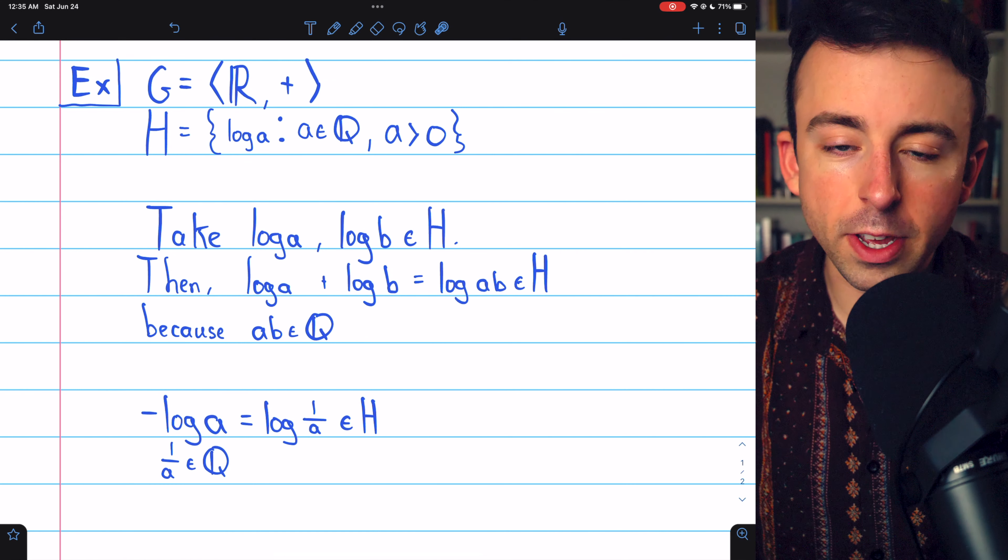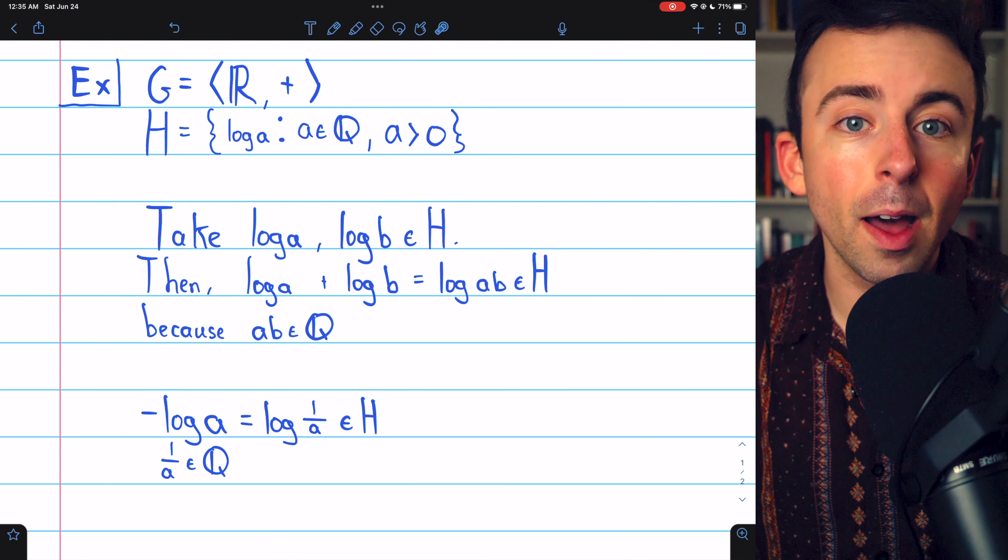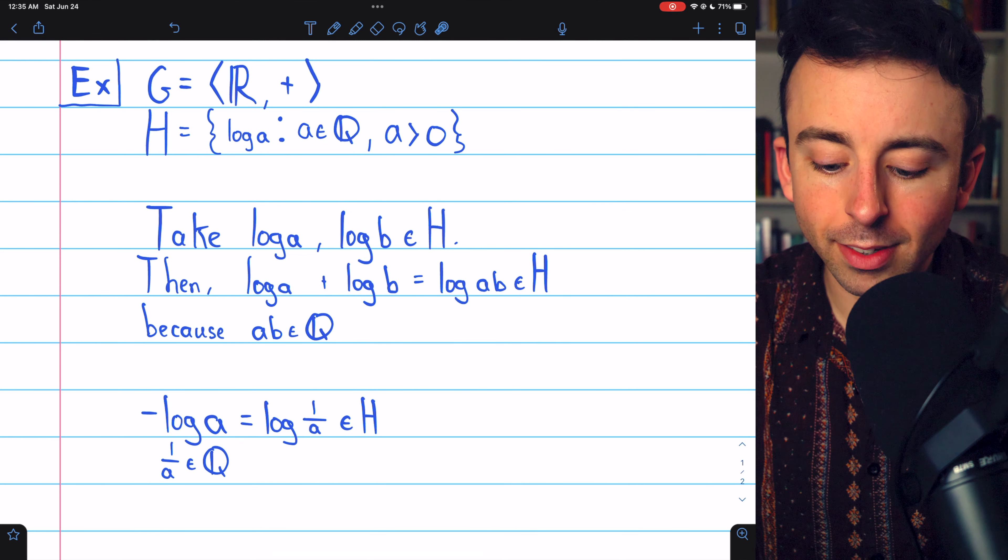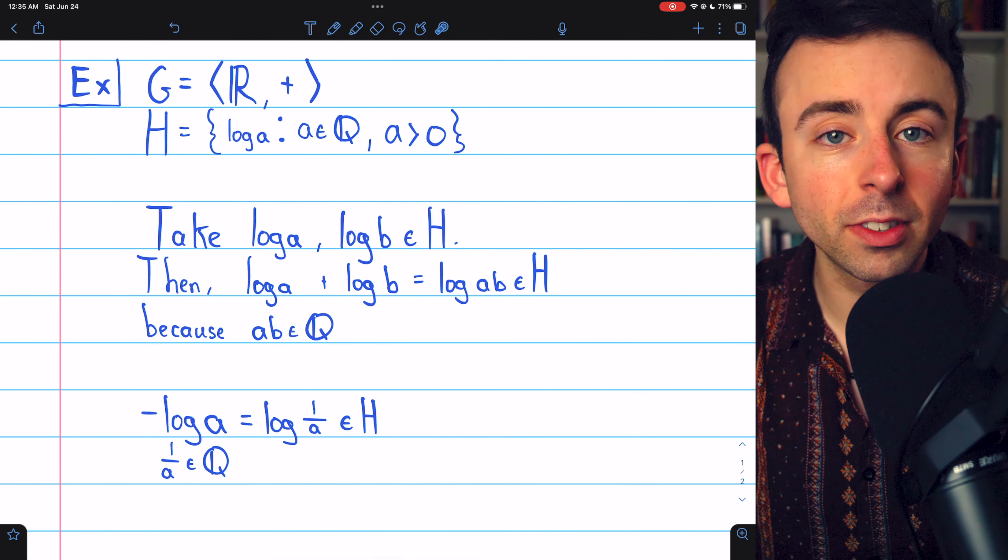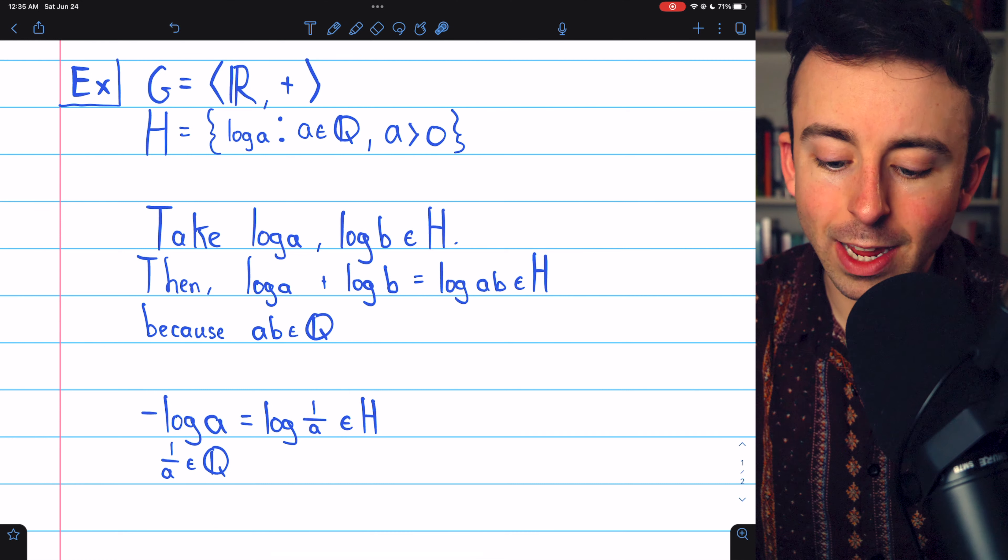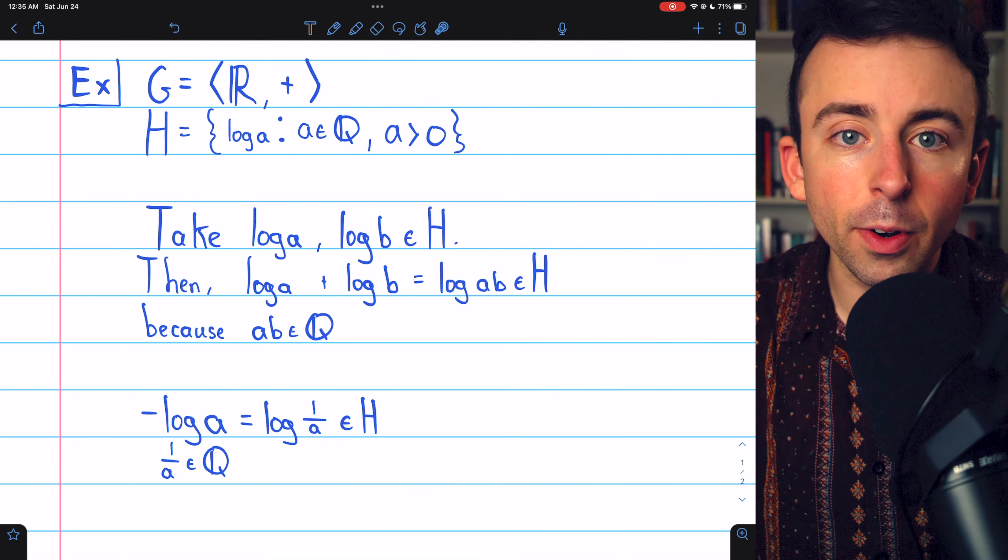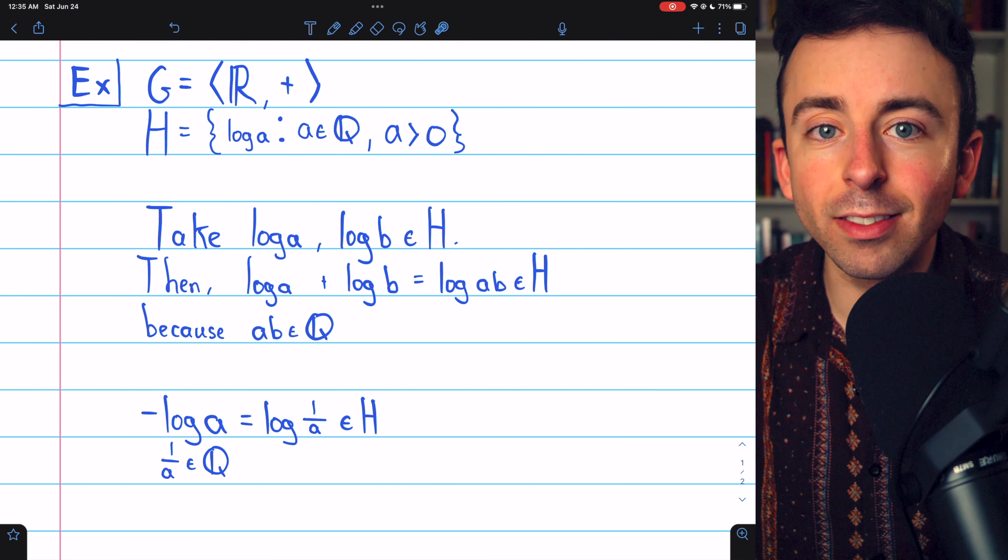Beginning with closure under the operation. Remember, in this case, the operation is addition. We take two arbitrary elements, log a and log b, from our subset H. Remember that a and b must be positive rationals. And then we'll add them together and need to show that sum is also in H.